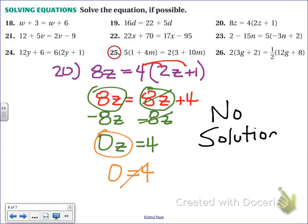So in this problem, the answer is no solution. There's no number that I can plug into my equation to make it true. This only happens when the variable goes away because we cancel it out. So the answer in this case is no solution.